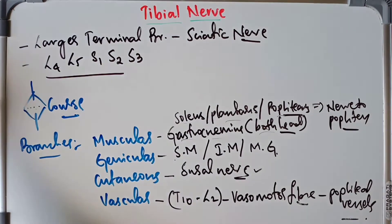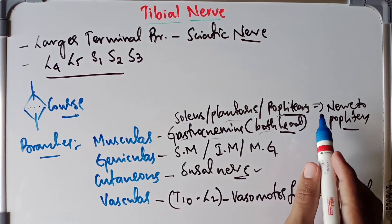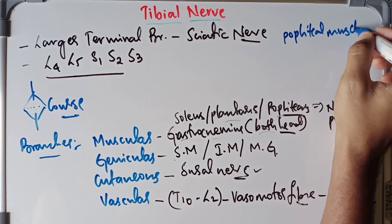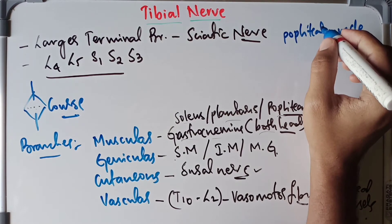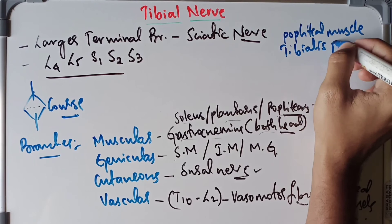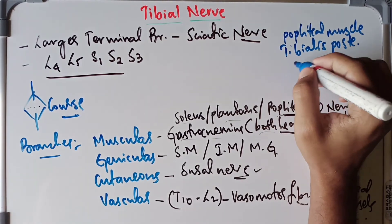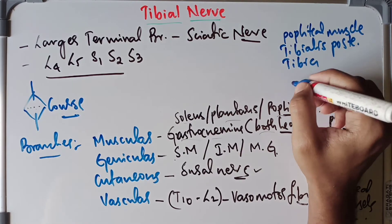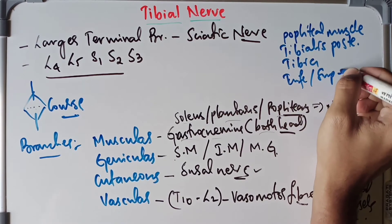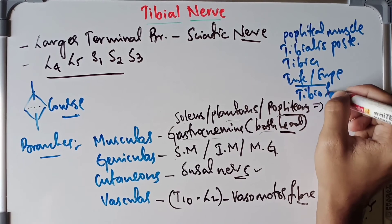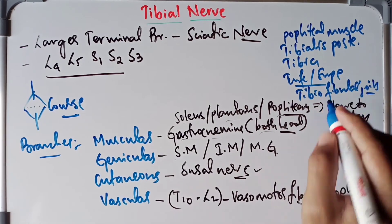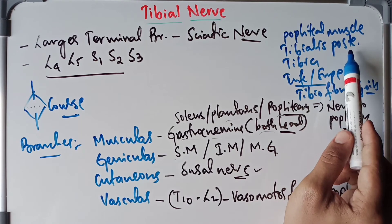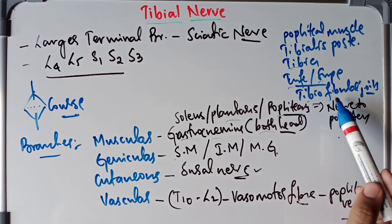The nerve to popliteus is a branch of the tibial nerve that supplies several structures. It is very important to remember — it supplies the popliteus muscle, the tibialis posterior muscle, the tibia itself, and the inferior as well as the superior tibiofibular joints.